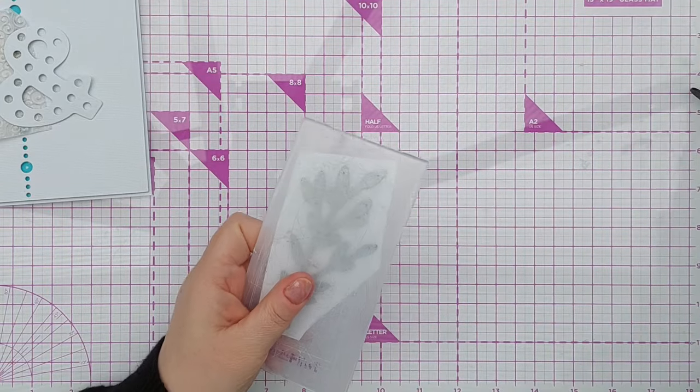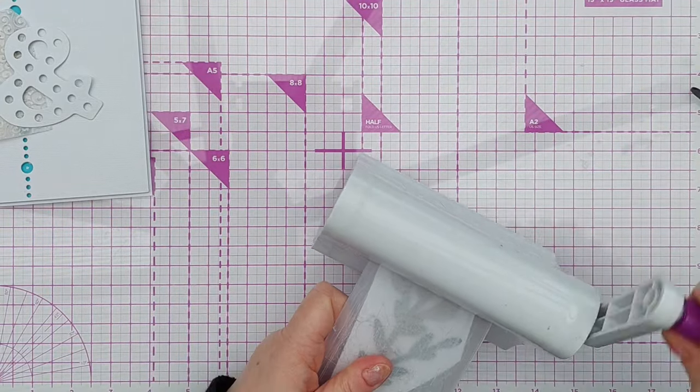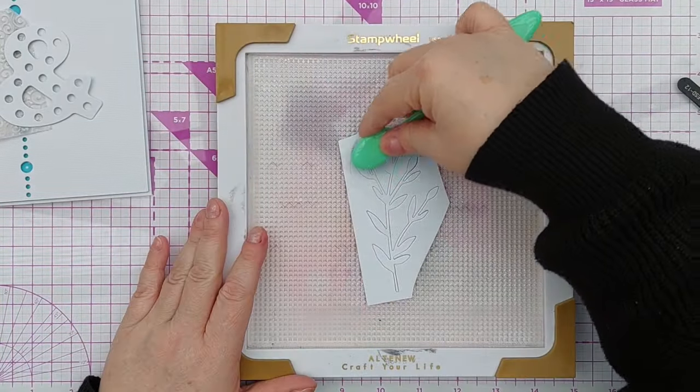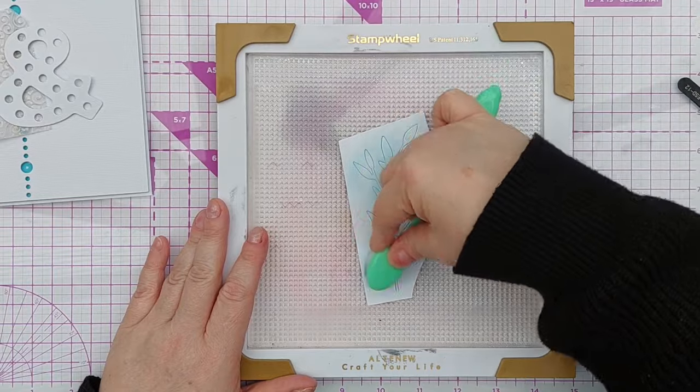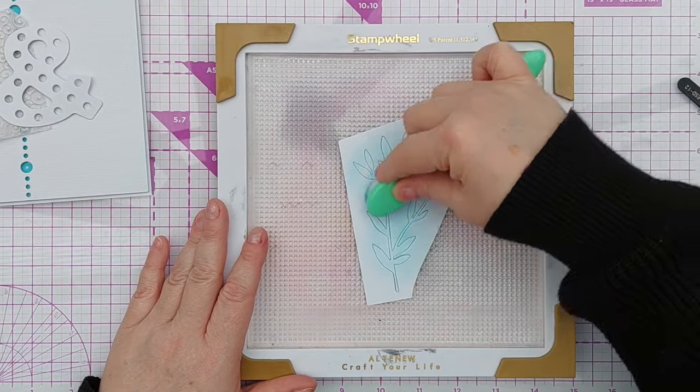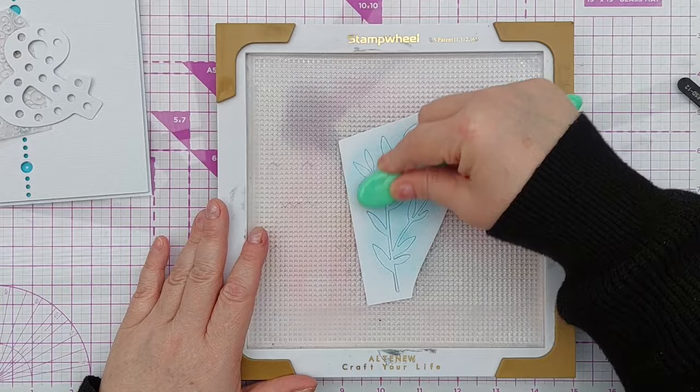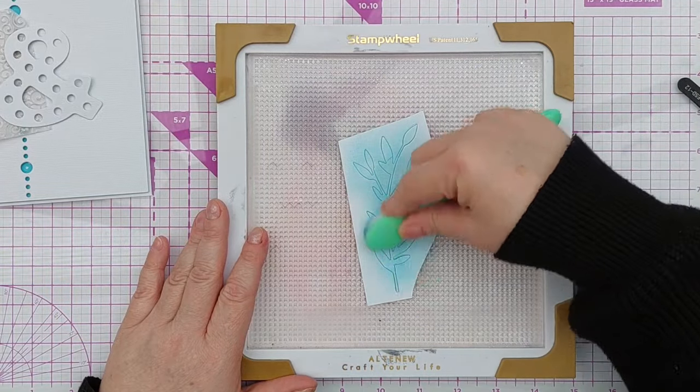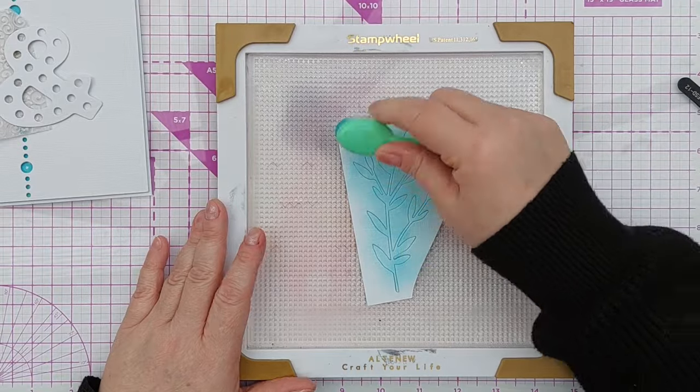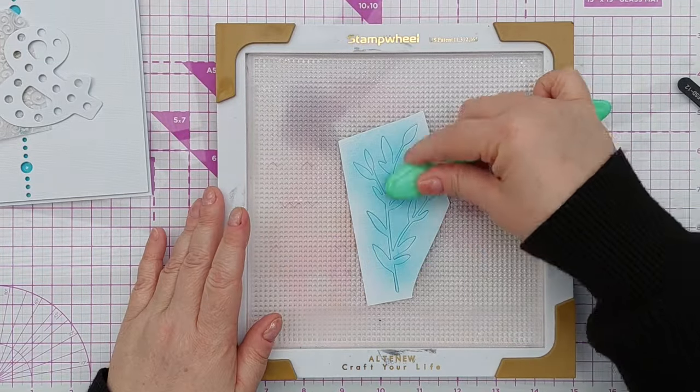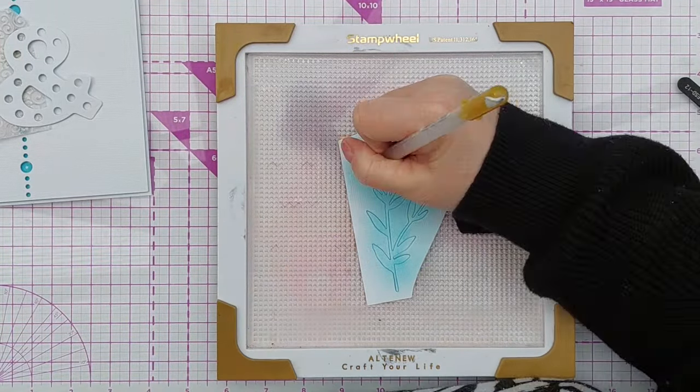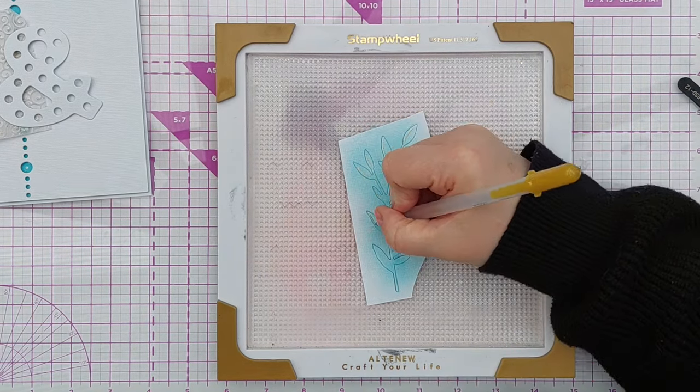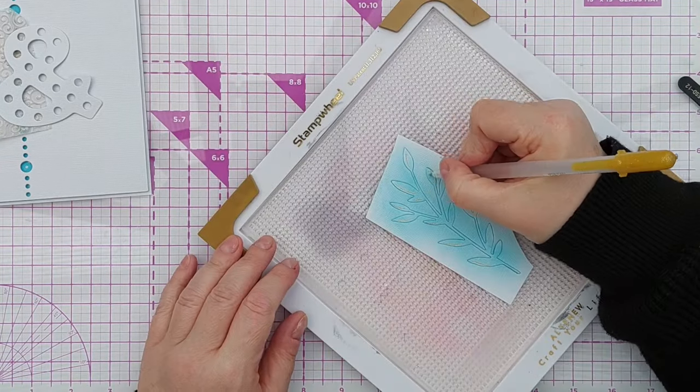The next die I grabbed was this leafy branchy die and I just cut the shape out of linen textured cardstock again. I did pop the whole thing onto a grid mat and just used the ink that was left on my brush to add a blush of the salvaged patina. And this brings the blue from the back to the front of the card and to bring some of the gold to the front as well I took a gold jelly roll pen and just did some little highlightish lines on the leaves of the branch.